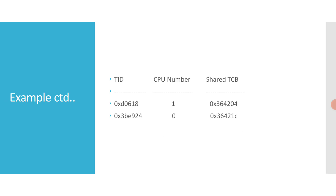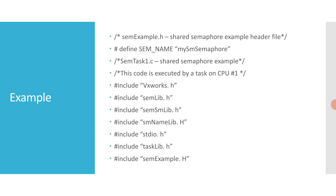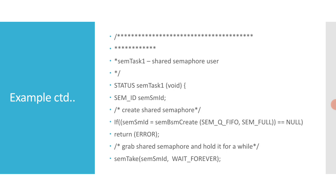The following code example depicts two tasks executing on different CPUs and using a shared semaphore. The routine sem_task_one creates the shared semaphore, initializing the state to full. It adds the semaphore to the name database to enable the task on the other CPU to access it. It then takes the semaphore, does some processing, and gives the semaphore. The routine sem_task_2 gets the semaphore ID from the database, takes the semaphore, does some processing, and gives the semaphore.